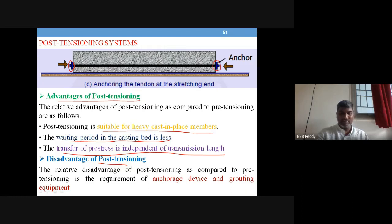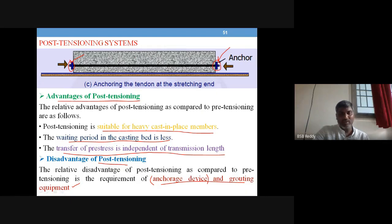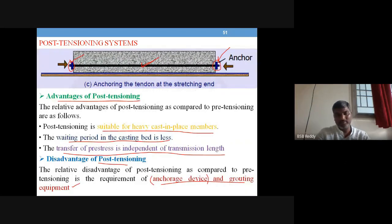Disadvantages of post-tensioning: anchoring devices and grouting equipment are costly. Pre-tensioning does not require permanent anchorage devices — anchorage is only needed until the concrete hardens. In post-tensioning, anchors must remain for the life of the member. Grouting requires additional equipment. These are the main disadvantages of the post-tensioning system.